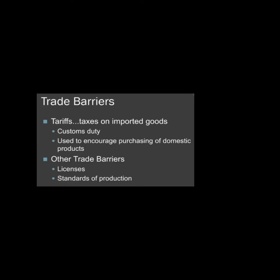The third trade barrier is tariffs. A tariff is essentially an import or export tax — taxes on imported commodities are called tariffs. In other words, it can also be referred to as custom duty. Custom duty is placed on things that come from outside.